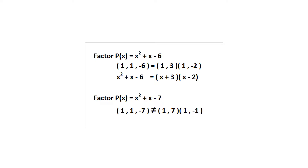Next, p(x) = x² + x − 6, written as the tuple 1, 1, −6. We ask: what two numbers multiply to get −6 and add to get 1? That's positive 3 and negative 2. So 1,1,−6 factors as (1,3)(1,−2), meaning x² + x − 6 = (x + 3)(x − 2). Order doesn't matter.